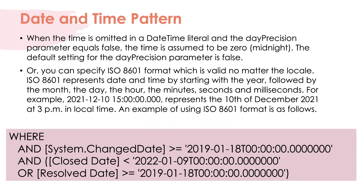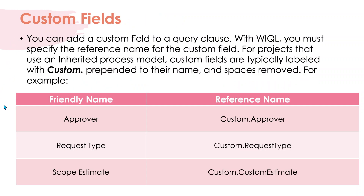There are different examples of DateTime patterns. When the time is omitted in the DateTime literal and the day-precision parameter is false, the time is assumed to be zero, which is midnight. You can also use the ISO 8601 format, which is valid regardless of locale. ISO 8601 represents date and time starting with the year, followed by month, day, hour, minute, seconds, and milliseconds.